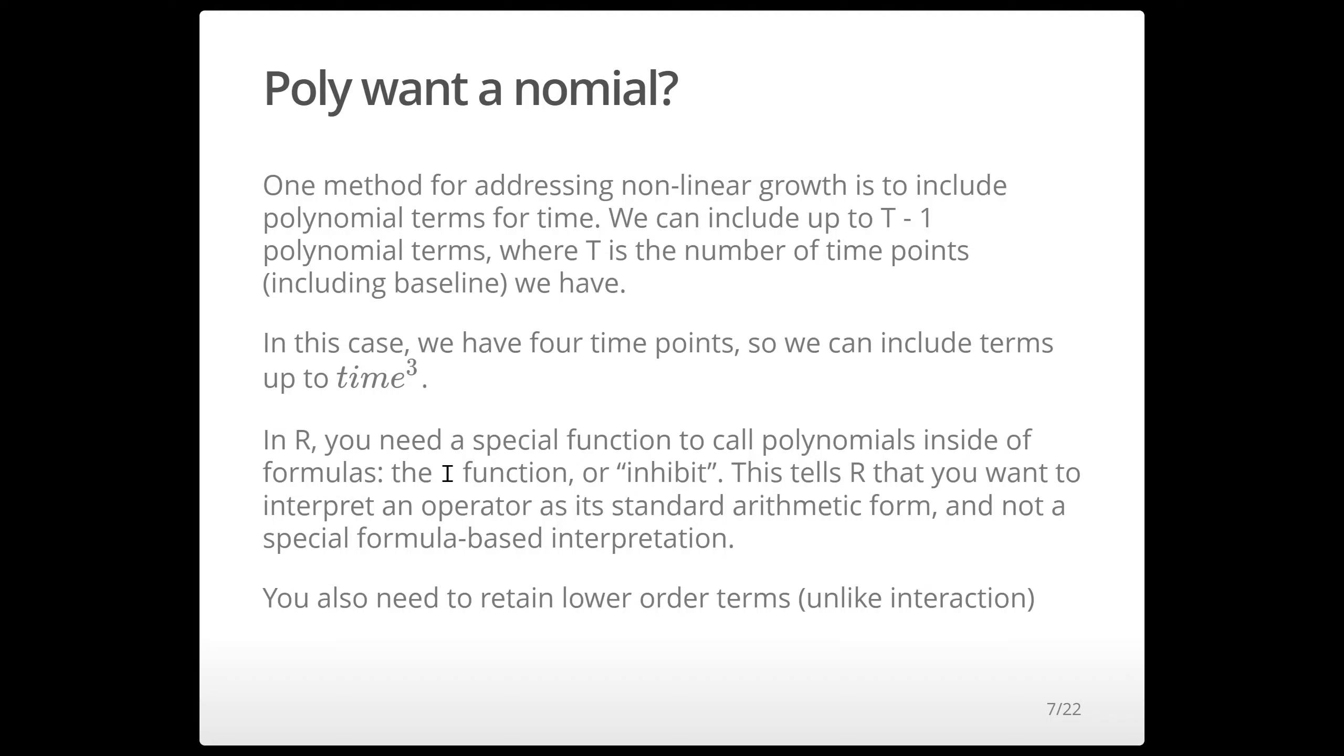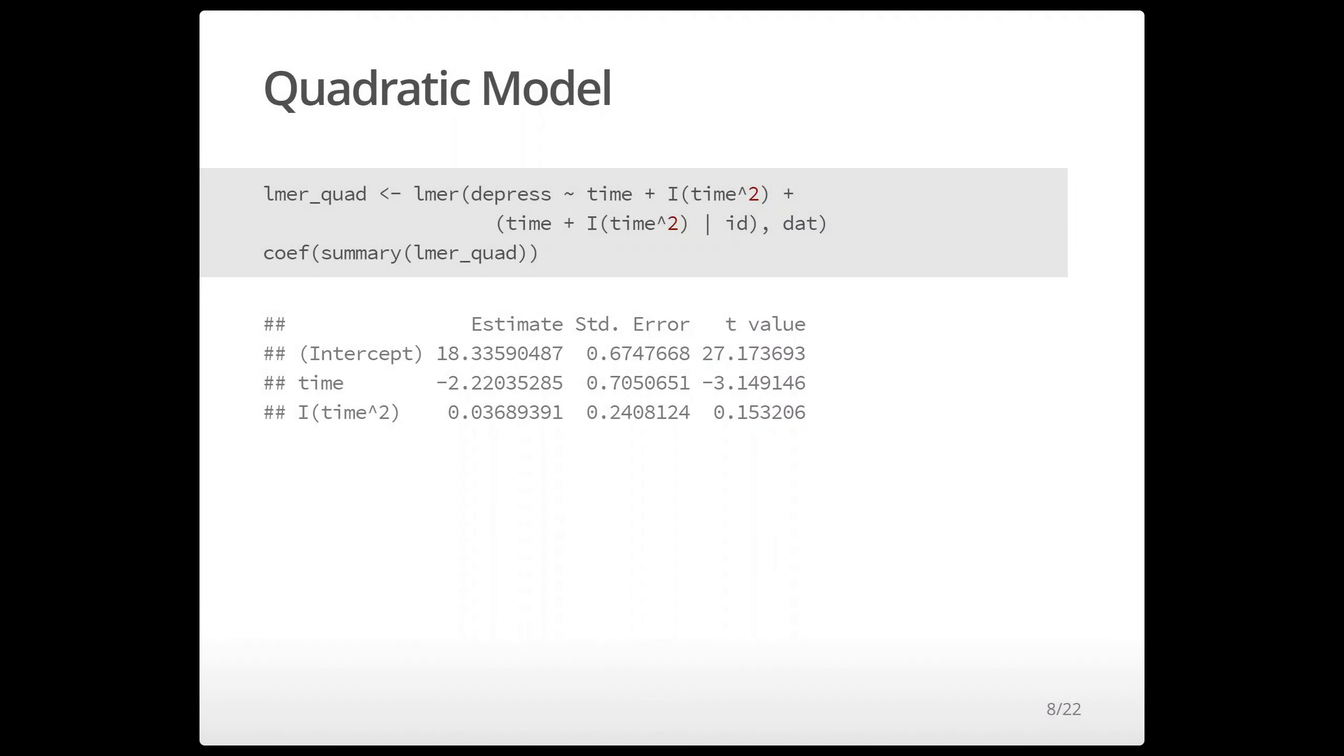And note that you do need to retain lower order terms when you write the syntax unlike with interaction. So here you see I fit a model with time squared by putting time squared inside of this i function and I keep the linear effect of time as well and I have random slopes for both.